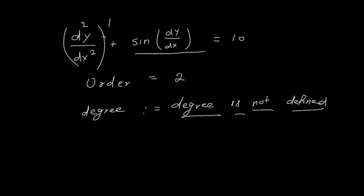If you are not able to express any of the derivative terms in polynomial form, you say that the degree is not defined. So whenever it is asked to find order and degree, it is possible that the degree may not be defined. For order, you always have a definite value, but degree may or may not be defined.